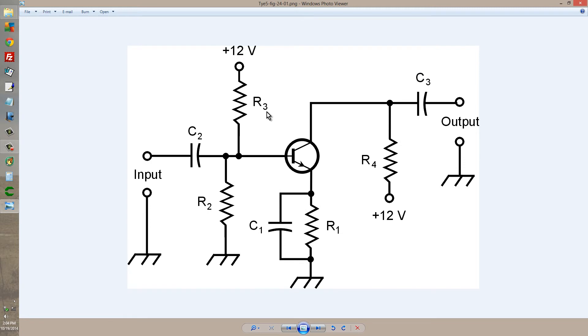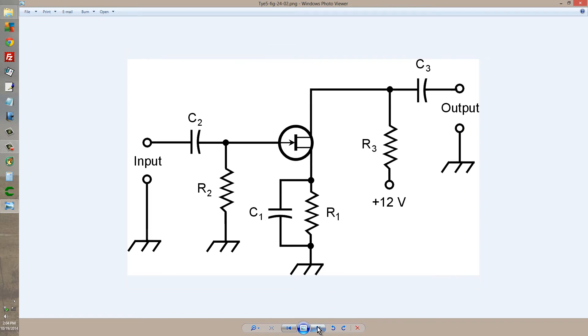This resistor right here, which goes from the control or input electrode to the positive power supply voltage, is not there. And the reason it's not there is because with this junction field effect transistor,